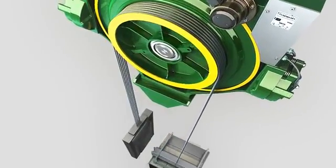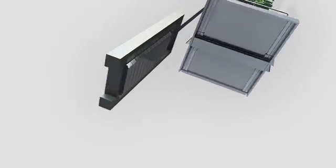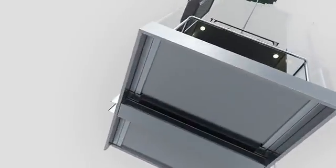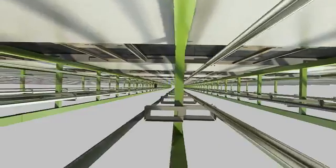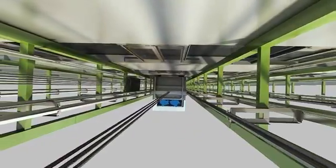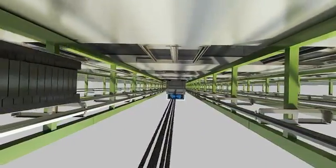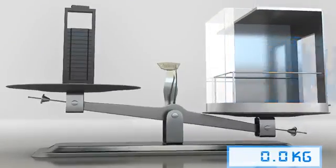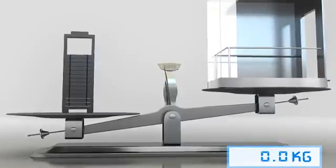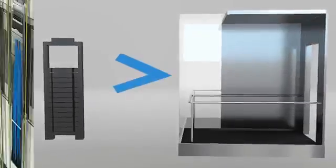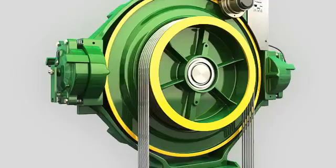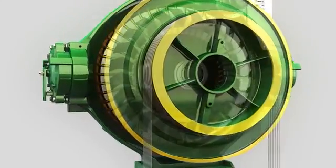The car and counterweight run up and down the elevator shaft, and the hoisting machine drives them in opposite directions. The car weight is usually different from that of the counterweight, depending on the number of passengers inside the car. When a fully loaded car starts to move,